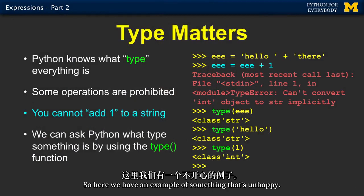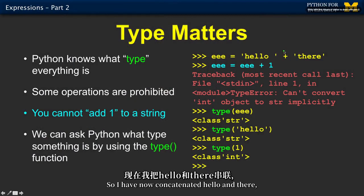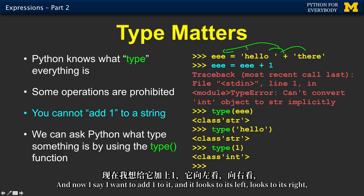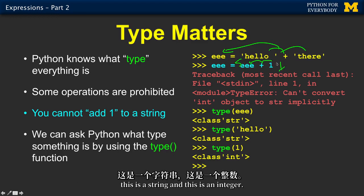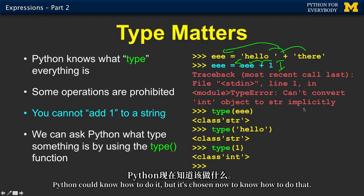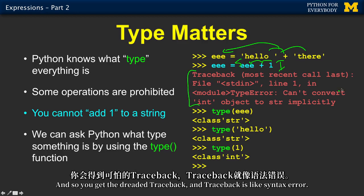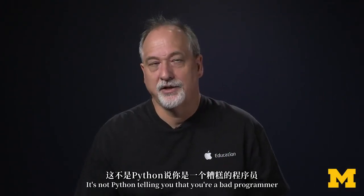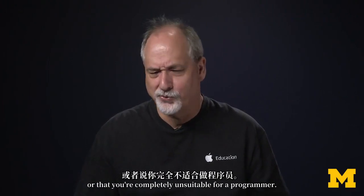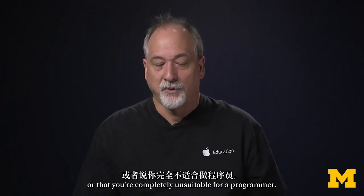So here we have an example of something that's unhappy. So I have now concatenated hello in there. And then Python's perfectly happy to do that. And then I stick that in EE. And now I say, I want to add one to it. And it looks to its left. It looks to its right. This is a string. And this is an integer. And Python says, I don't know how to do that. Python could know how to do it. But it's chosen not to know how to do that. And so you get the dreaded traceback. And traceback is like syntax error.